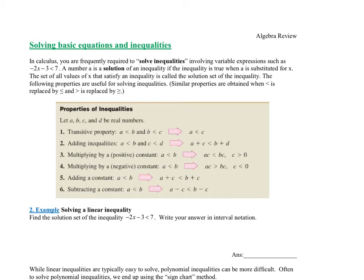One of the things we're going to need to do in calculus a significant number of times is solve inequalities and equations. In calculus you are frequently required to solve inequalities involving variable expressions such as negative 2x minus 3 is less than 7. A number is a solution of an inequality if the inequality is true when that value is substituted for x. The set of all values of x that satisfy the inequality is called the solution set. The following properties are useful for solving inequalities.